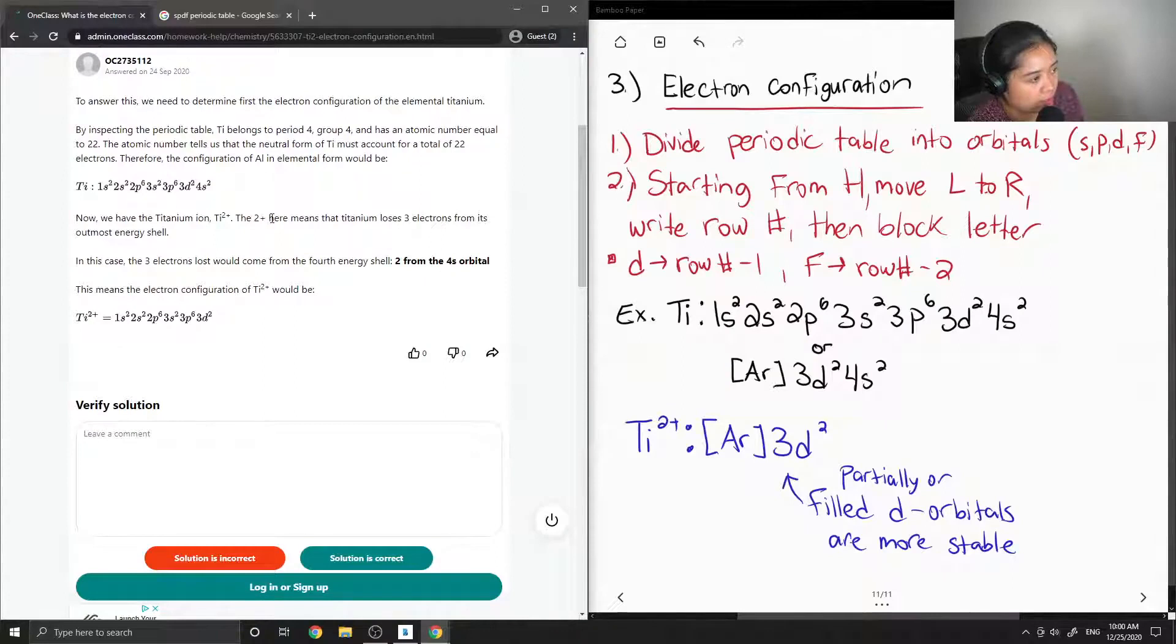Now we have the titanium ion. The 2 plus here means that titanium loses, I think they mean two electrons, from its outermost shell. So in this case, the two electrons lost would come from the fourth energy shell, two from the 4s orbital. This means that the electron configuration would be 1s2 2s2 2p6 3s2 3p6 3d2.